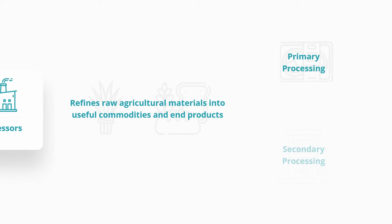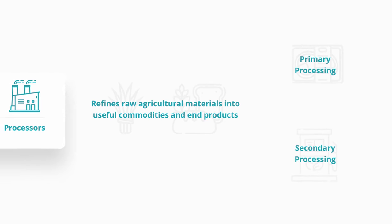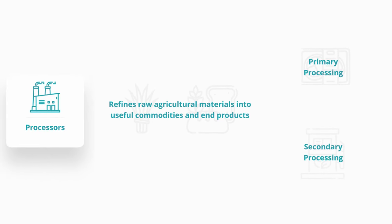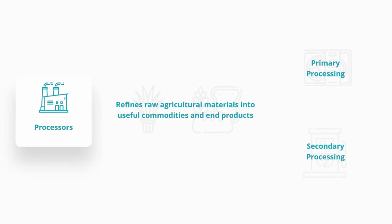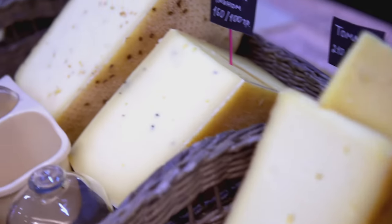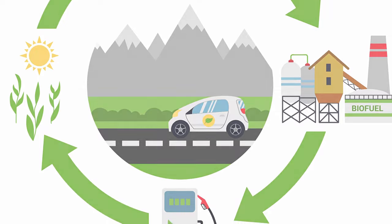Secondary processing takes these commodities and transforms them into something consumable — for example, cheese making or biofuel conversion.